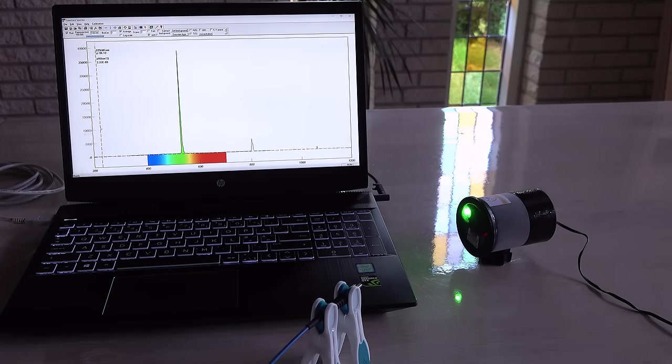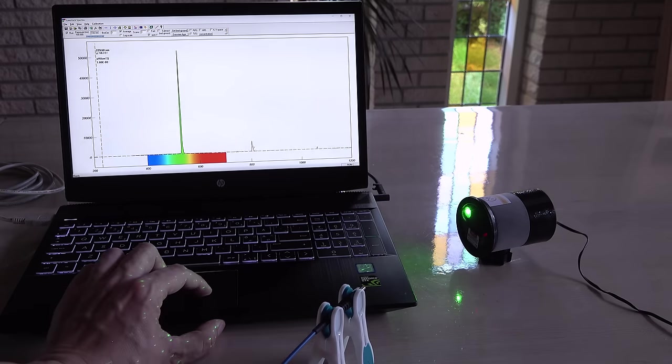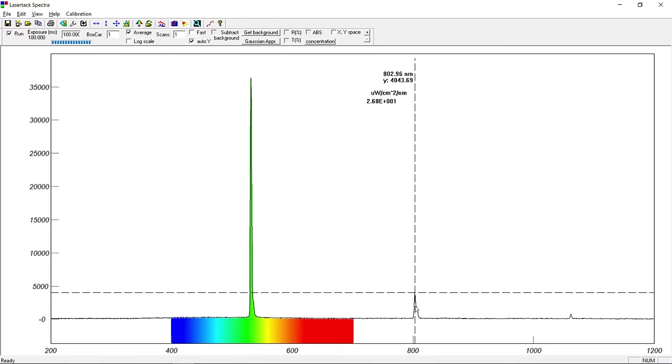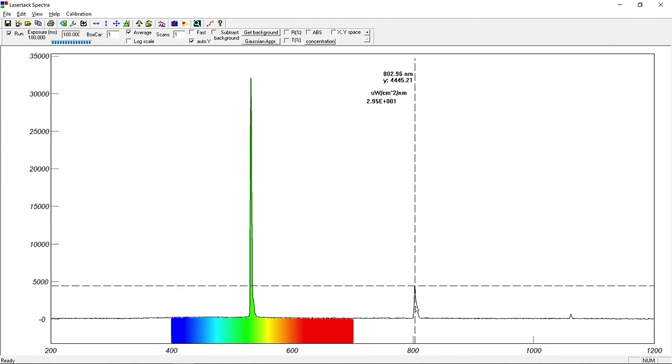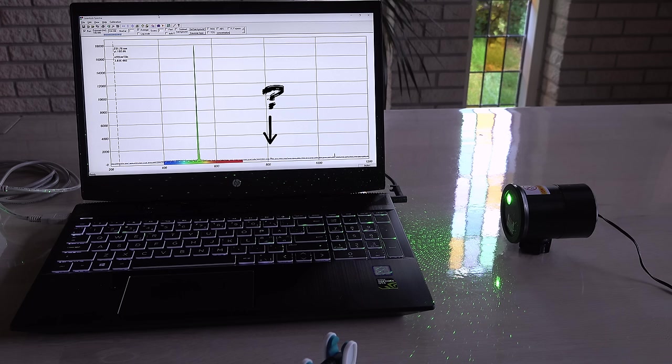After a few minutes the heating elements and the room temperature has heated the laser enough for it to start lasering in the green. However, the 808 nanometers leakage is still there. Why was it not showing in the test of the warm laser?